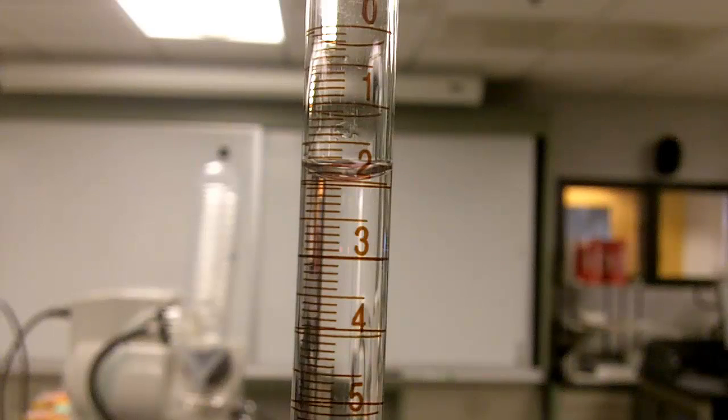And just remember what you do to find the volume that's dispensed is take your final number, which in this case is 1.90, and subtract your initial number of 0.21 from that to give you your overall volume dispensed.